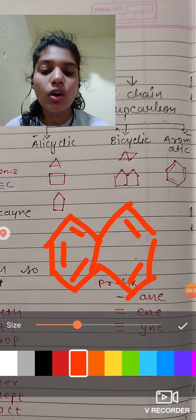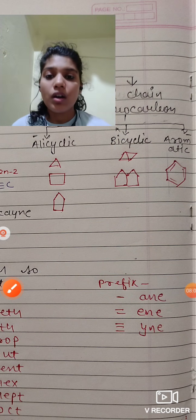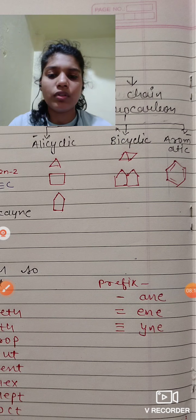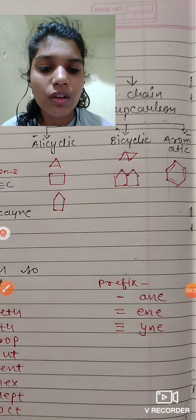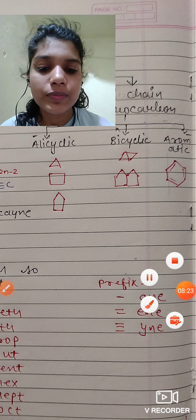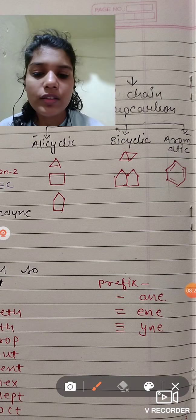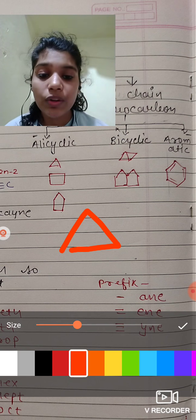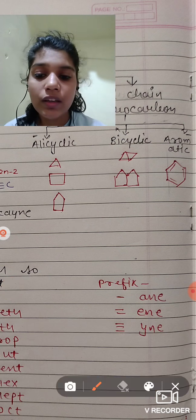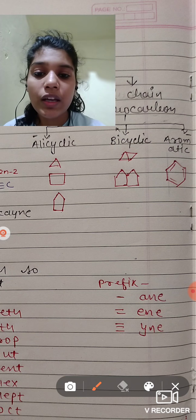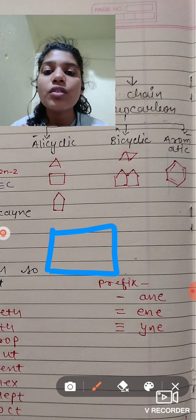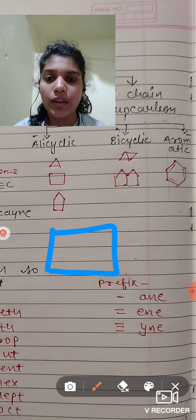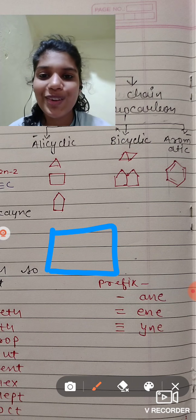Actually, all of this in the form of cyclo. So we can say that this is a cyclopropane because it consists three carbon. And another, this consists four, so what will say, cyclobutane.